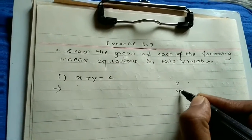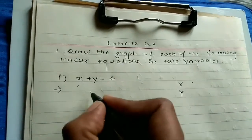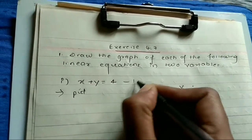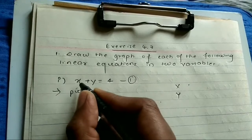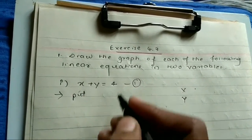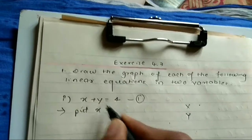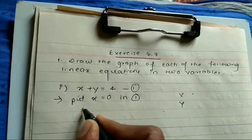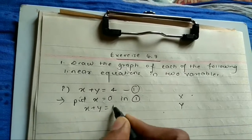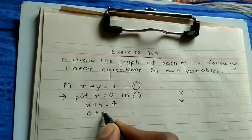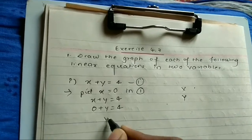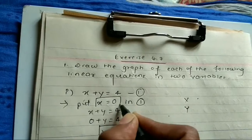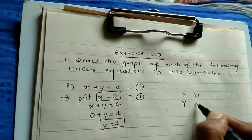Write X and Y in a table. You can put the value of X or the value of Y — I would like to put the value of X. So putting X equals 0 in equation 1, which is X plus Y equals 4: that gives 0 plus Y equals 4, so Y equals 4. When X is 0, Y is 4.